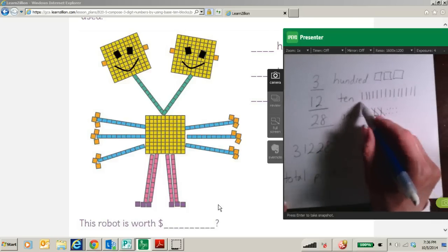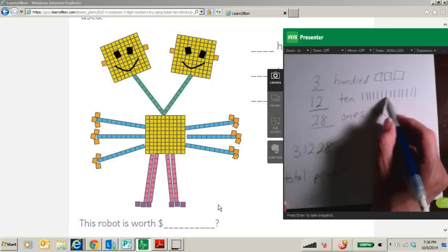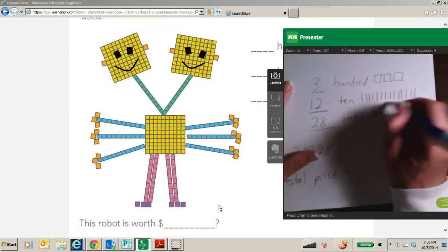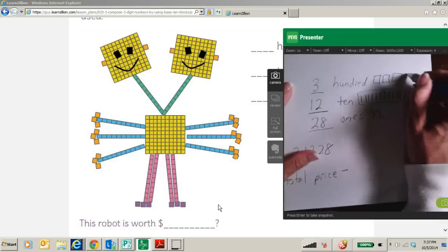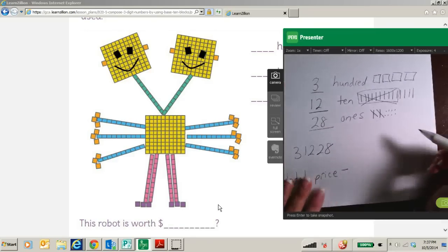I also know that 10 groups of 10 make 100. So we have 1, 2, 3, 4, 5, 6, 7, 8, 9, 10. I am going to take all of these and I am going to move them to the hundreds and make 1 group of 100. So now,